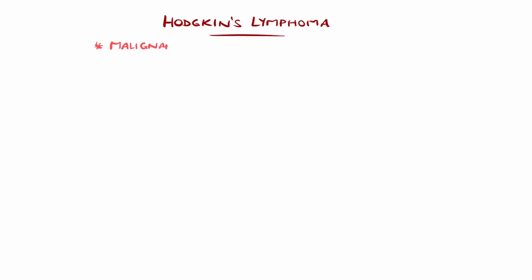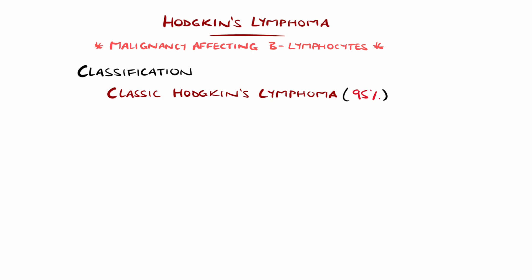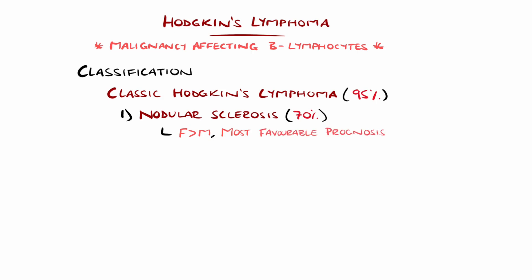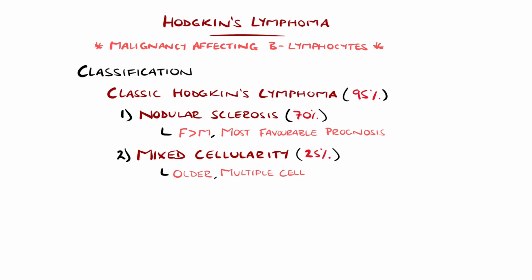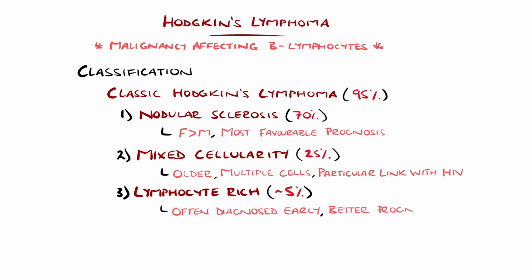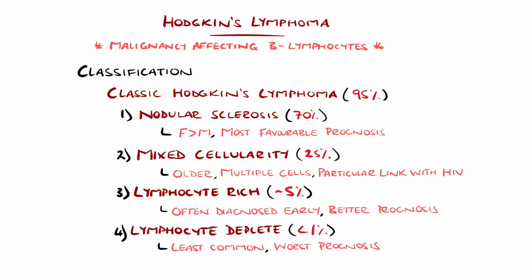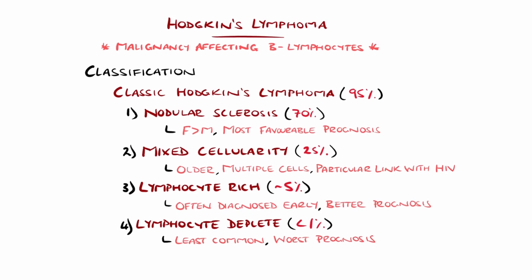Hodgkin's lymphoma is a malignancy affecting the B lymphocyte cells and is divided into classical Hodgkin's lymphoma, which makes up 95% of cases, further divided into four types. Nodular sclerosis makes up 70%, is more common in females than males, and has the most favourable prognosis. Mixed cellularity makes up 25%, tends to affect the older population, and includes plasma cells and histiocytes — it is also more common in those with HIV. Lymphocyte rich makes up 5% and is often diagnosed early, while lymphocyte depleted makes up less than 1%, is the least common, features the worst prognosis, and is often diagnosed late.